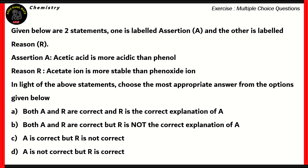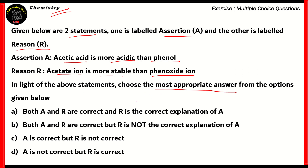Now let's look at our final question — an assertion-reason question. We have two statements: one labeled as the assertion and the other as the reason. In assertion-reason type questions, there are four options: one says both statements are correct and R explains A; another says both A and R are correct but R is not the correct explanation of A; option C says A is correct but R is not correct; and option D says the assertion is incorrect but the reason is correct. The assertion is: acetic acid is more acidic than phenol. The reason is: acetate ion is more stable than phenoxide ion.